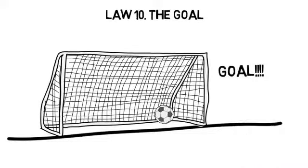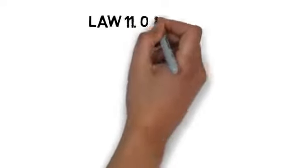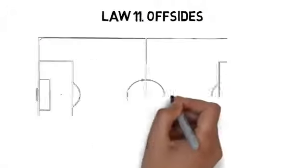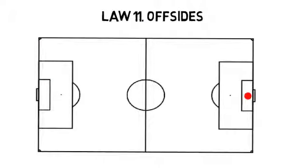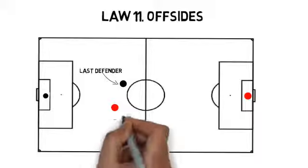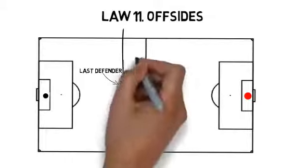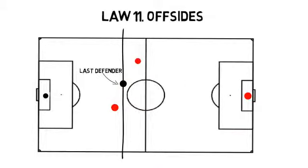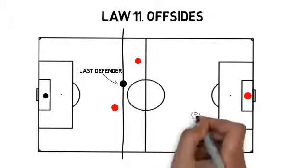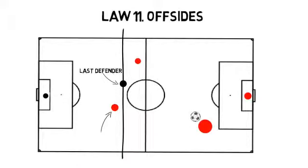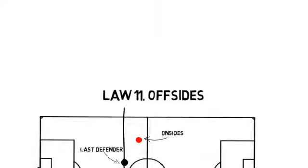Law 11: offsides. This is the most complicated law of the game. It has to do with the last defender and when the ball was passed to the attacking player. If the receiving player was beyond the last defender line at the moment of the pass, it is offsides. This only applies to the opposing team's half — you can never be offsides on your own half of the field. There are no offsides on goal kicks, corner kicks, and throw-ins. Offsides is not recommended for youth under 12 years old.